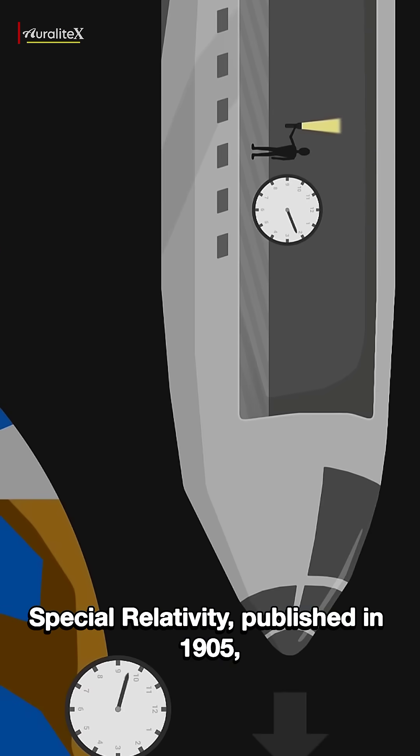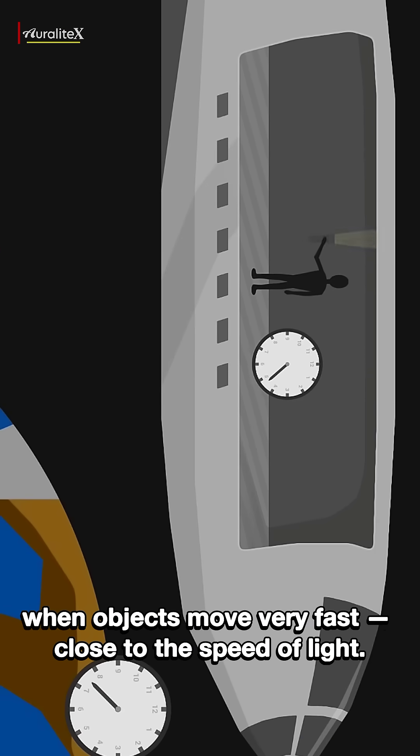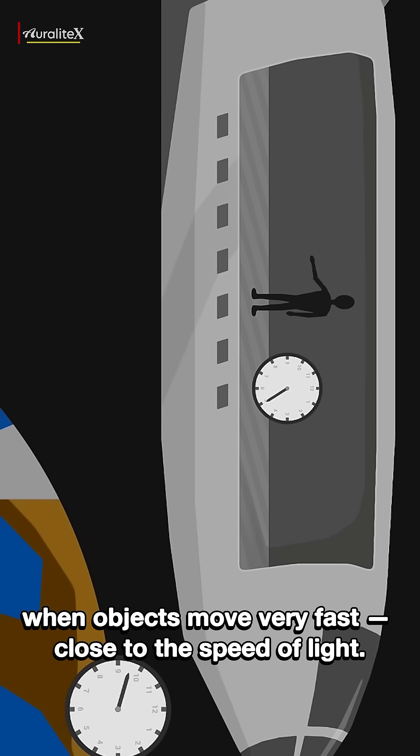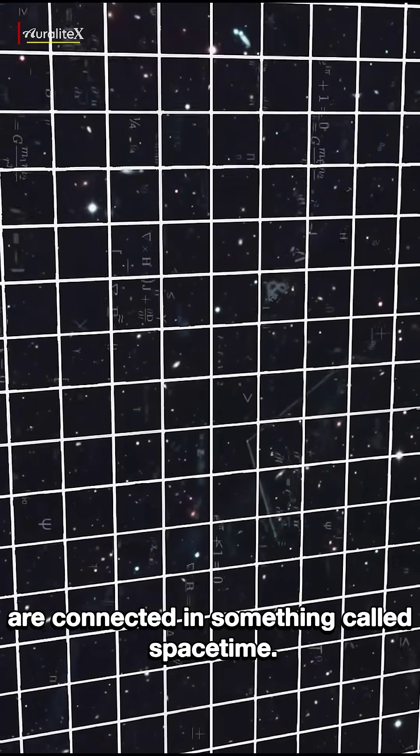Special relativity, published in 1905, focuses on how space and time behave when objects move very fast, close to the speed of light. Einstein discovered that time and space are connected in something called spacetime.